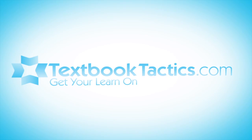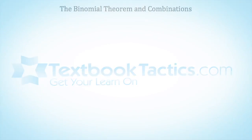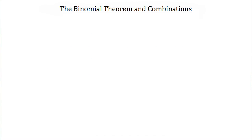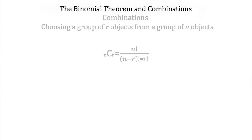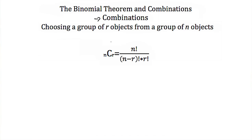This is a tutorial on the binomial theorem and combinations. The first thing we're going to talk about are combinations. Combinations are a collection of r objects selected from a larger group of n objects, and we want to know how many different combinations of r objects out of n objects there are.